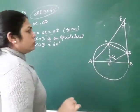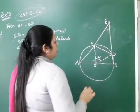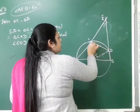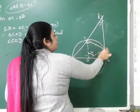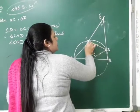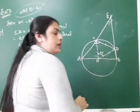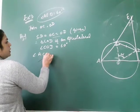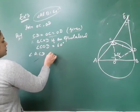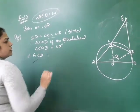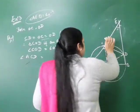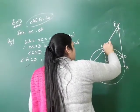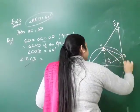Now, we also note angle ACD. AB is the diameter. So we join BC to use the semicircle angle property.